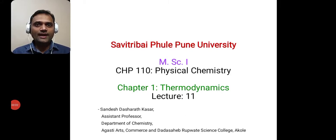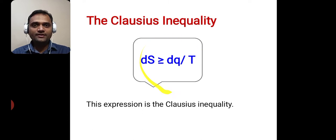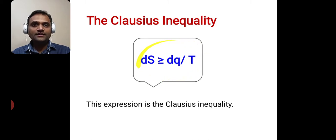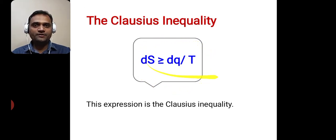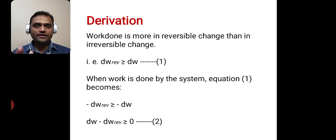Welcome to the 11th lecture of the chapter Thermodynamics. Our today's point of discussion is the Clausius inequality, and the expression is ds is greater than or equal to dq upon T, where ds is the change in entropy, dq is the change in heat, while T is the temperature. So this expression is the Clausius inequality.